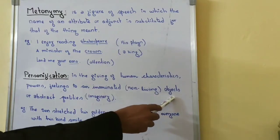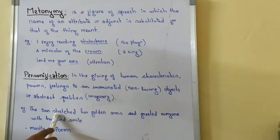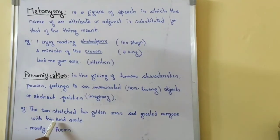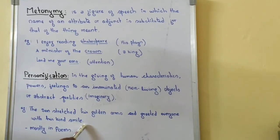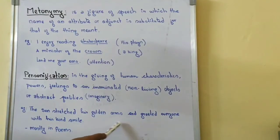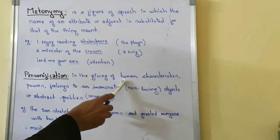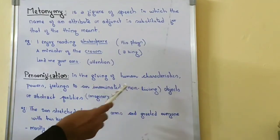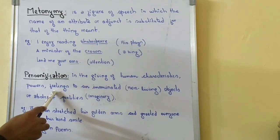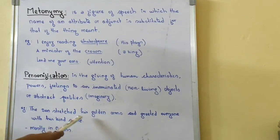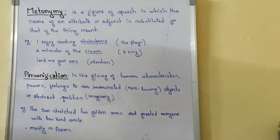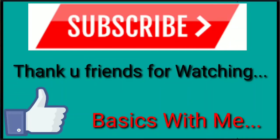For example, the Sun is a non-living, inanimate object. 'He stretched his golden arms and greeted everyone with his kind smile' — all these actions and feelings are characteristics of human beings, but here they are given to a non-living thing. This technique is mostly used in poems.